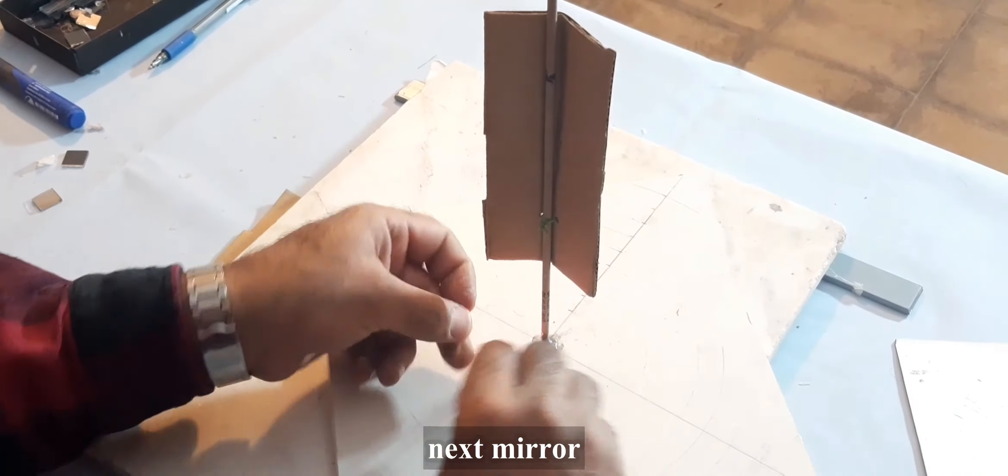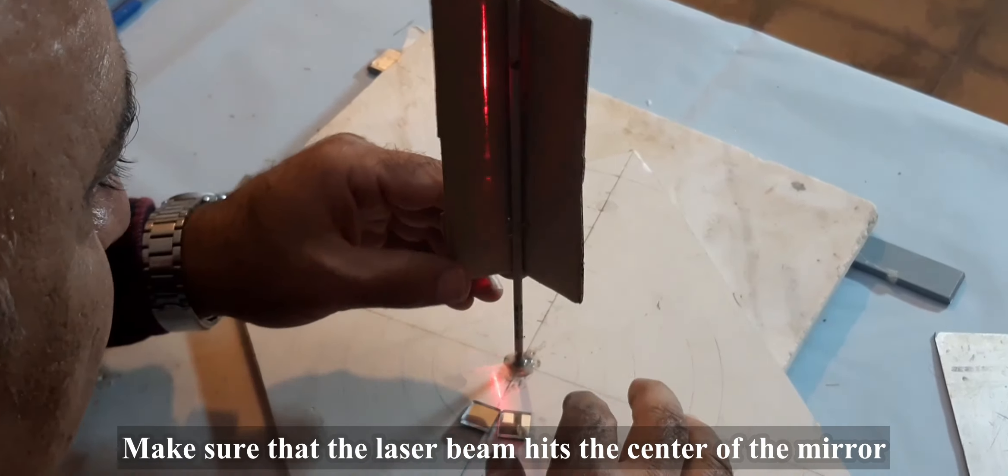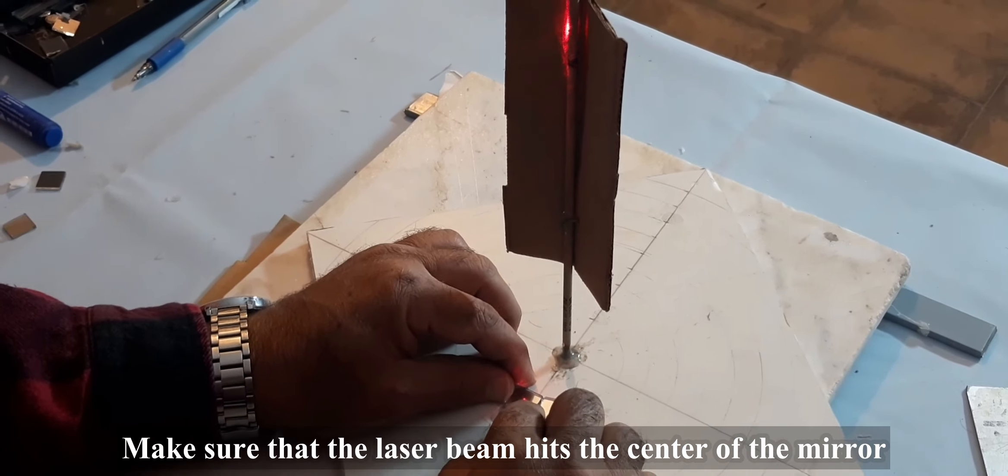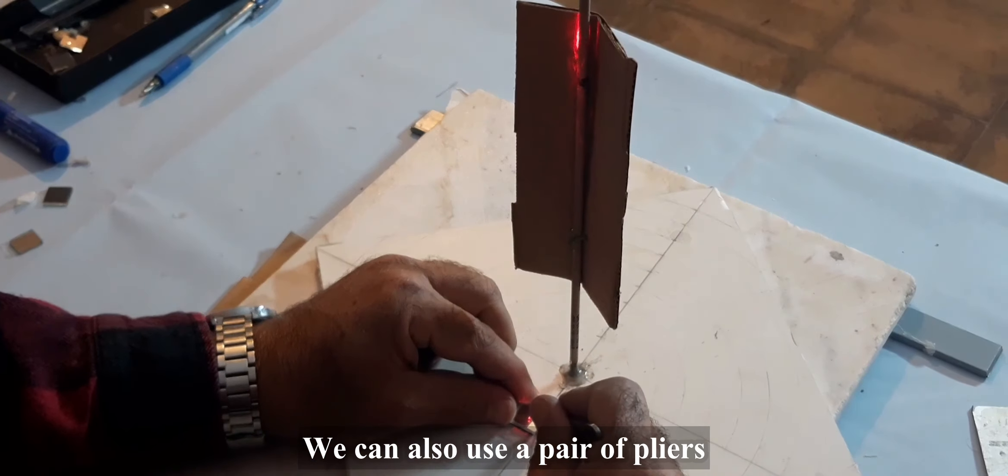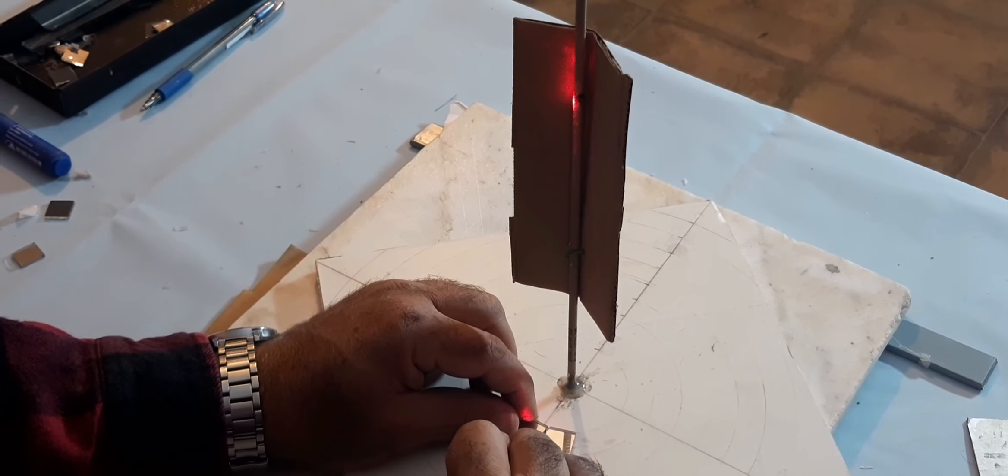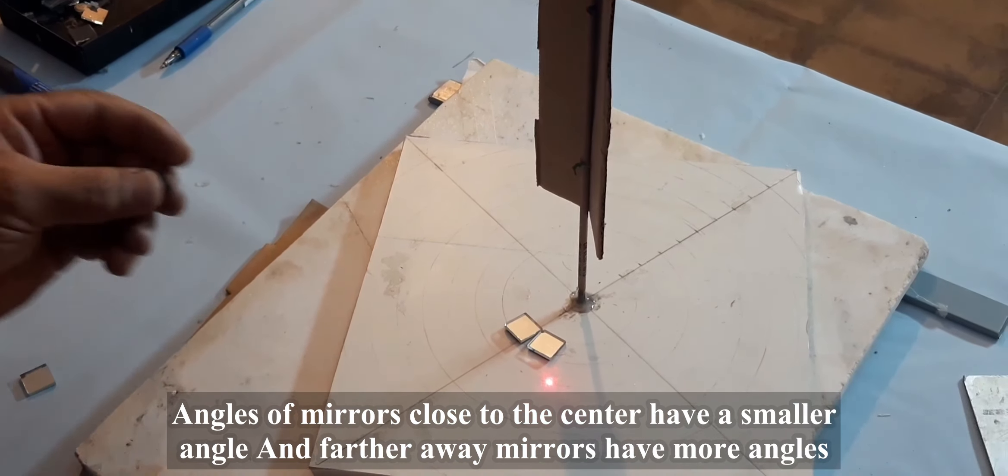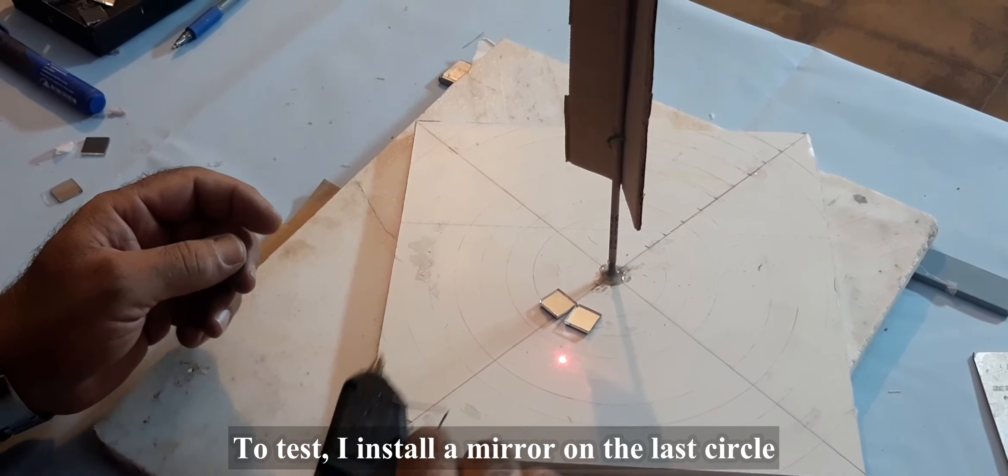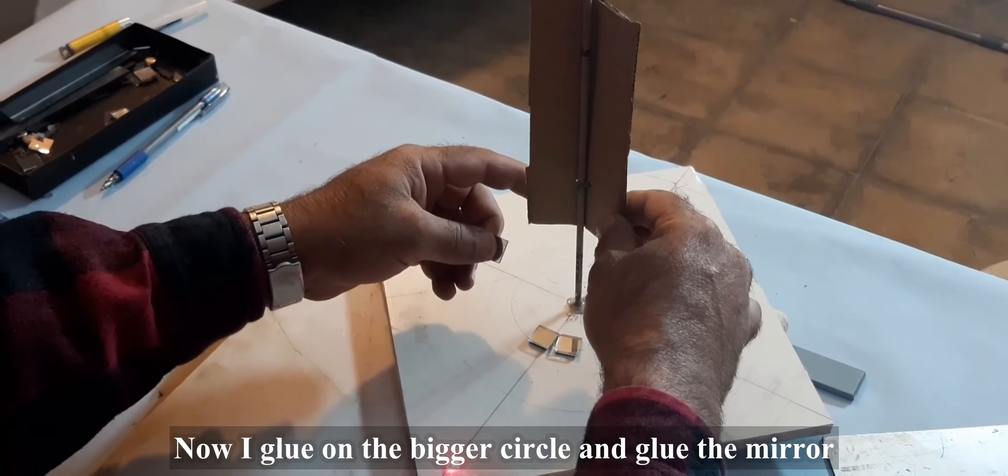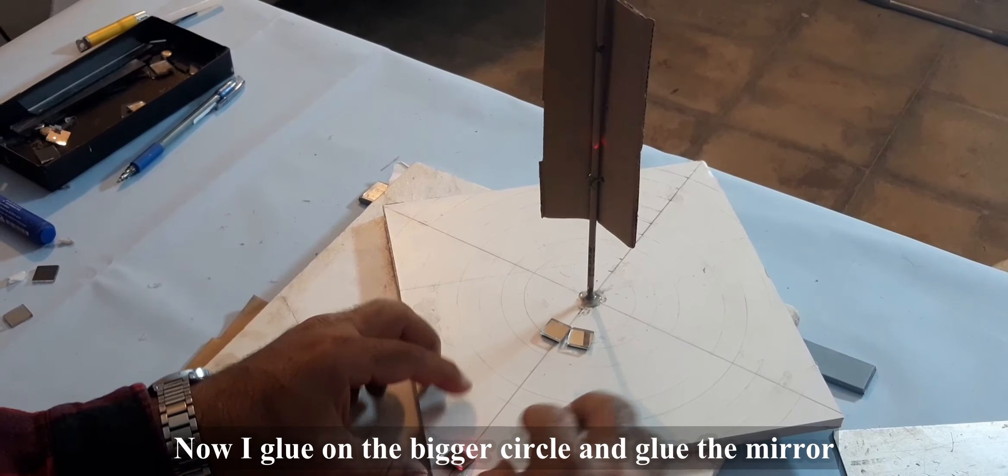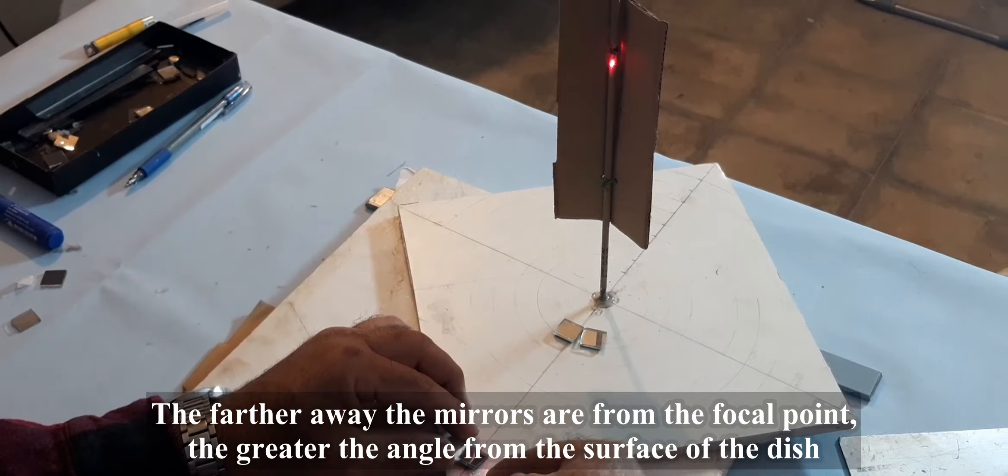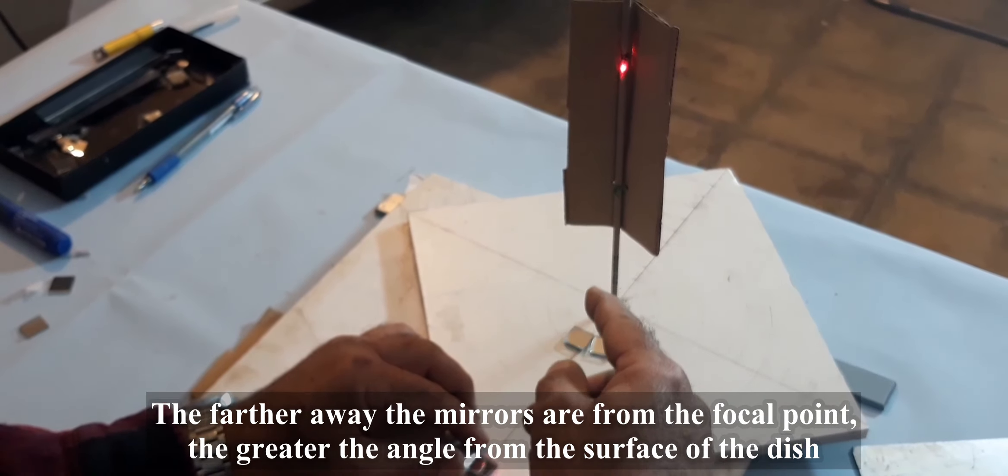Next mirror. Make sure the laser beam hits the center of the mirror. We can also use a pair of pliers. To install mirror on the last circle I will continue. Now I glue the bigger circle and glue the mirror. The further away mirrors are from the focal point, the greater the angle from the surface of the dish.